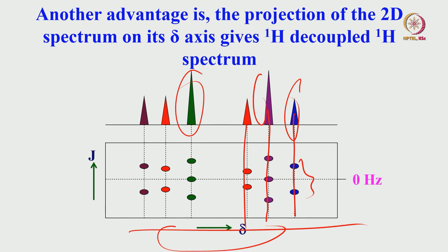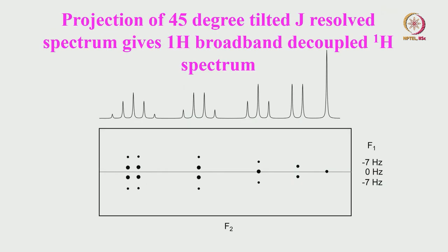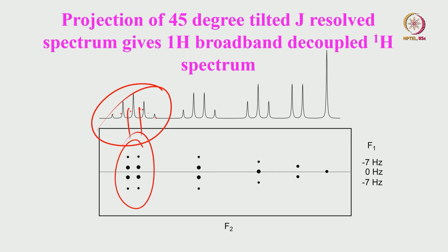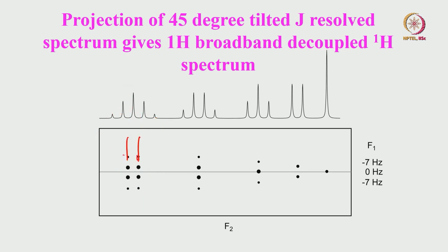This is the beauty of this experiment. 2D J-resolved: if you take it and take the projection onto the F2 axis, you get chemical shifts of all the protons — a fantastic broadband-decoupled proton spectrum. This is an example of a 45-degree tilted spectrum. A pentuplet appears because two peaks are overlapped, but there are two different chemical shifts. Look: 1,3,3,1 — one quartet; 1,3,3,1 — another quartet, but each has different chemical shifts. Two quartets, and also a triplet, doublet, and singlet — everything resolved in a hypothetical spectrum.